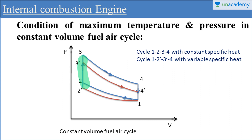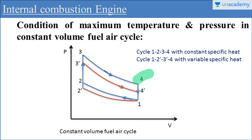For process 2, 3 we are considering constant volume heat addition, as well as for process 2 dash, 3 dash we are considering constant volume heat addition. Similarly, for 3, 4 and 3 dash, 4 dash we are considering reversible adiabatic expansion, and for 4, 1 and 4 dash, 1 we are considering constant volume heat rejection.